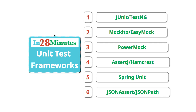In this video, we looked at a wide variety of unit testing frameworks in the Java world. We started with the basic unit testing framework JUnit and its alternative TestNG. We looked at how to do mocking with Mockito and talked about the alternative EasyMock. We talked about PowerMock which allows us to mock static methods, constructors, and private methods. We talked about AssertJ and Hamcrest for easy asserts on lists. We talked about the Spring unit testing framework for Spring MVC controllers, repositories, and launching a Spring context. Finally, we looked at JSONAssert and JSONPath for writing asserts against JSON responses.